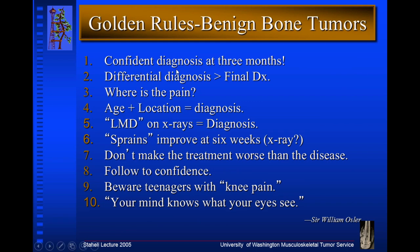Golden rules for bone tumors: have a confident diagnosis after the first couple of visits in the first three months. If you don't have a confident diagnosis on plain x-rays after the first couple of visits, you need to go to additional imaging. If there's any concern about differential diagnosis, the patient needs to be followed carefully, probably with additional imaging. A lot of times it's hard to tell where a child is having pain. Where the pain is located will determine where the problem is and sometimes what the diagnosis is. Age of the patient and location of the pain will make major hints to the orthopedic surgeon or your pediatric and family practice doctors.